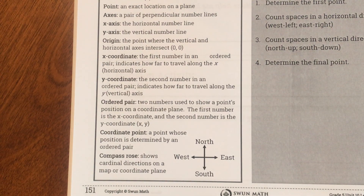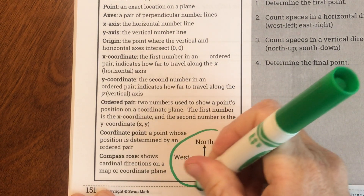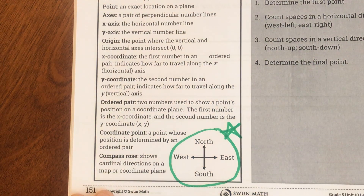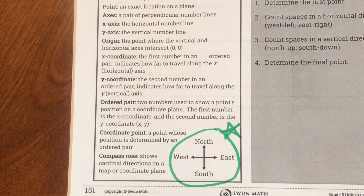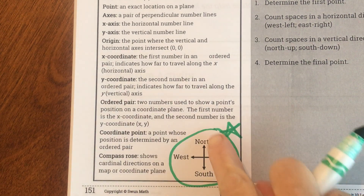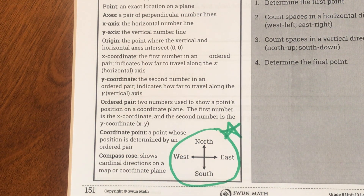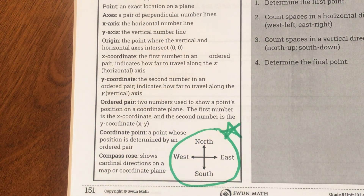When we talk about cardinal directions, here are our cardinal directions. In the past two lessons we've been using directions such as left, right, up, and down. These are cardinal directions. So today we're going to be practicing words like north, south, west, and east.